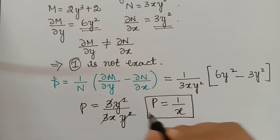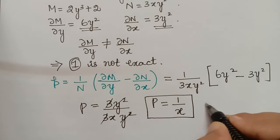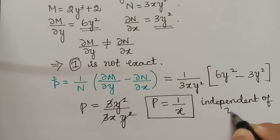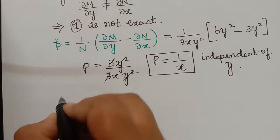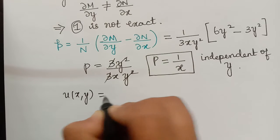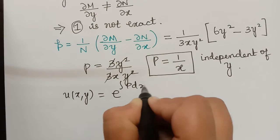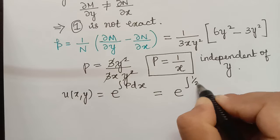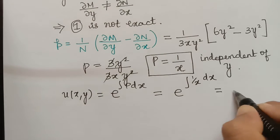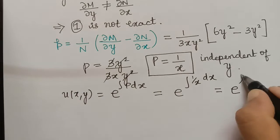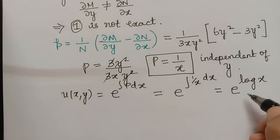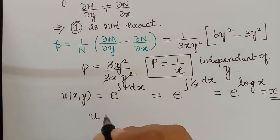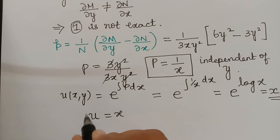We observe that P is a function of x alone — there is no y, so it is independent of y. Therefore the integrating factor u(x, y) = e^(∫P dx) = e^(∫(1/x) dx) = e^(log x) = x. So the integrating factor is x.